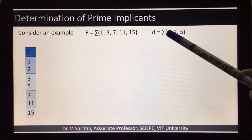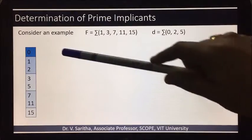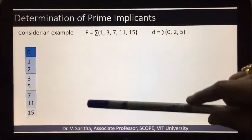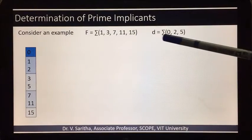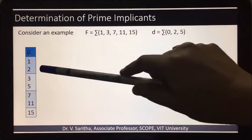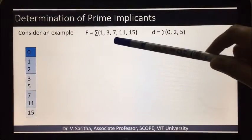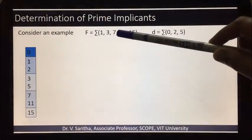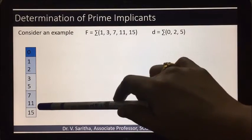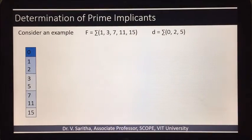0 doesn't have any ones so it's the first group. 1 has a single one so it's the second group. Then 2 has a single one so second group. Then 3 and 5 have two ones. 7 and 11 have three ones, and 15 has four ones.